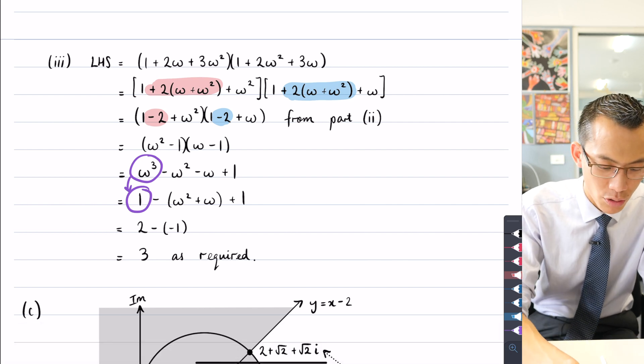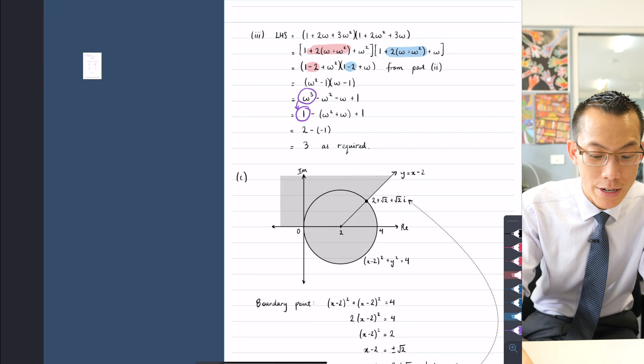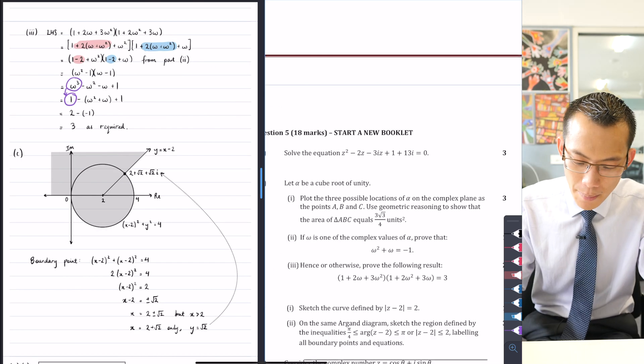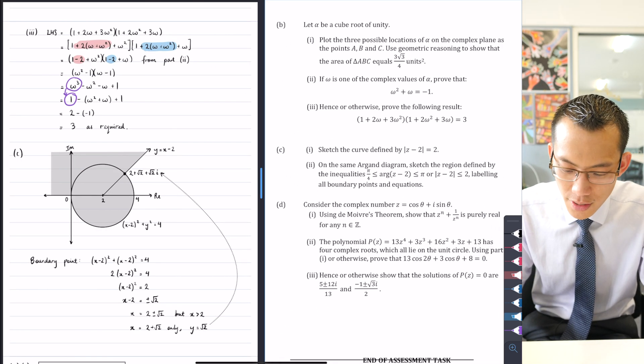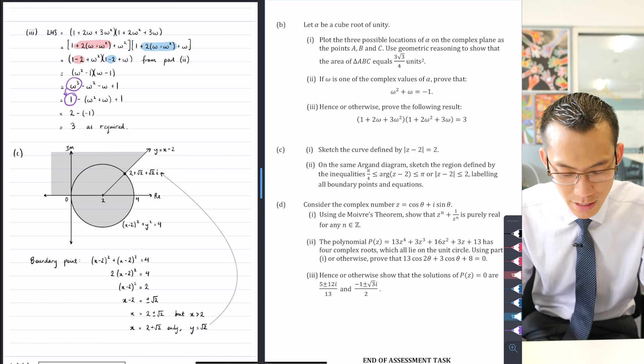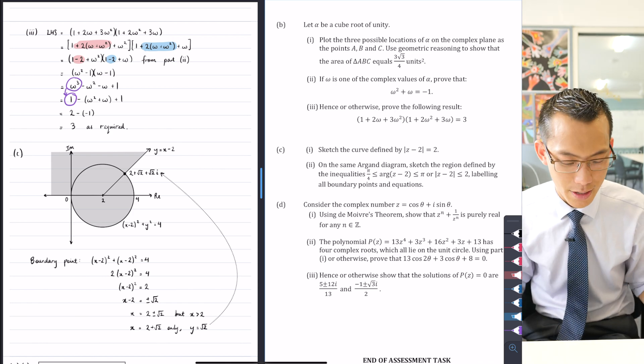Okay, now part c. Let's talk this through. Again, read the question carefully. Part c says sketch the curve defined by the modulus of z minus two equals two. We're pretty fine with this.